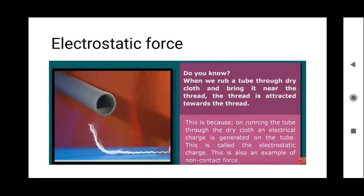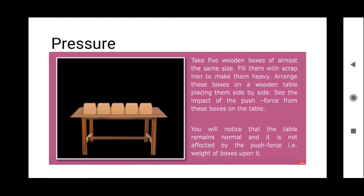Now let us move to the next important topic: pressure. Whenever force is there, pressure will automatically be created on that object. Let us do a simple experiment. Take five wooden boxes of almost the same size, fill them with scrap iron to make them heavy, and arrange them on a wooden table side by side. See the impact of the push from these boxes on the table. Do you notice any changes? No — the table remains normal and is not affected by the weight of the boxes placed on it.